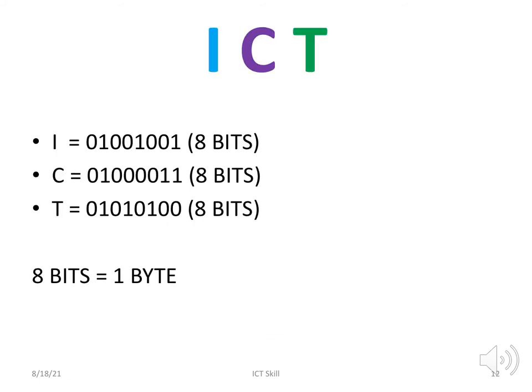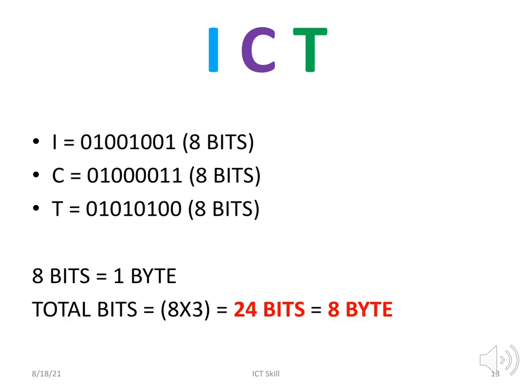Each byte is eight bits. For the word ICT: I is 01001001, C is 01000011, and T is 01010100. So there are 24 bits total — calculated as 8 times 3 equals 24 bits, which equals three bytes. Every character, number, symbol, or alphabet represents eight bits.